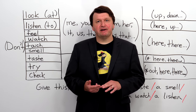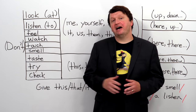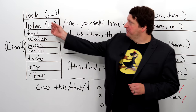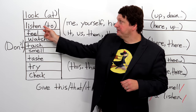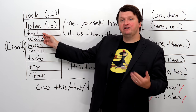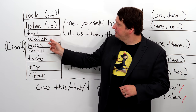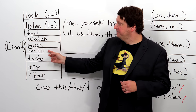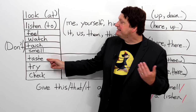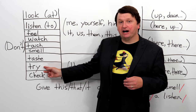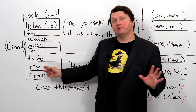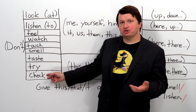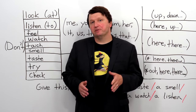So what are the human senses? There's touch, sight, smell, and hearing. We're going to look at some verbs, and at the end, another way to give imperatives that use sensory words. We have: look with your eyes, listen with your ears, feel with your skin and hands and fingers, watch with your eyes, touch with your hands, smell with your nose, and taste with your tongue. Also try — which typically could mean taste for food or something else — and check, which could mean touch, smell, or taste.